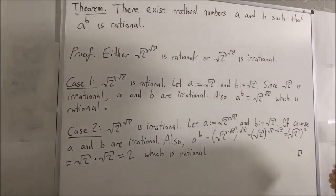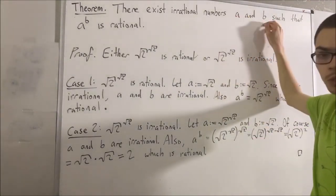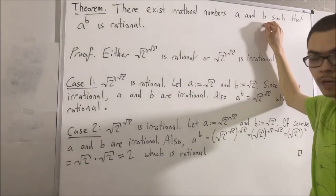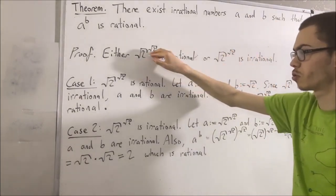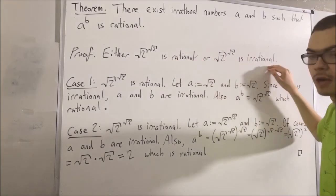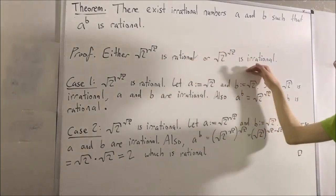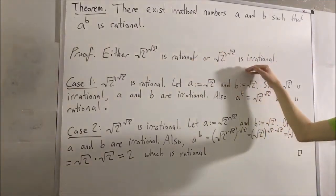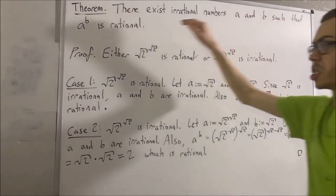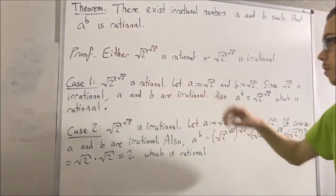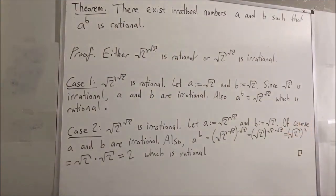Note that we have not actually figured out what these two irrational numbers are, because we don't know whether or not square root of 2 to the power of square root of 2 is rational or irrational. But no matter which one is true, there are two irrational numbers a and b such that a to the power of b is rational. That's pretty much the idea of how you could prove this.